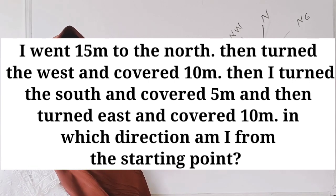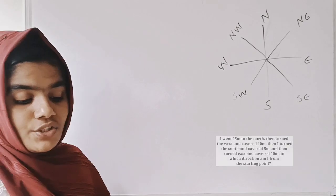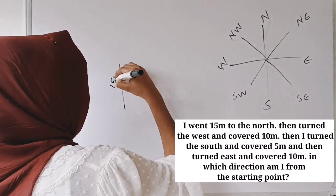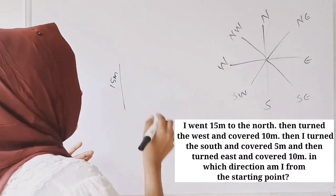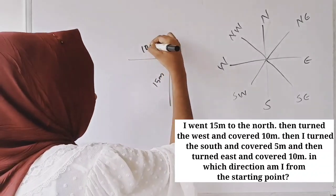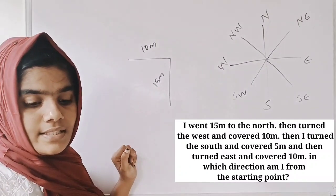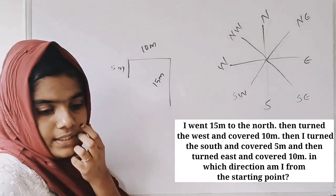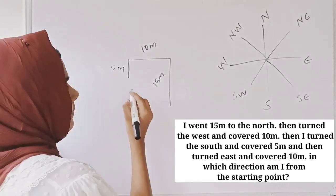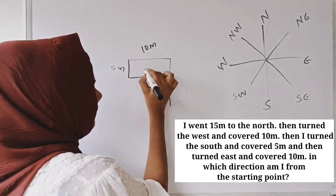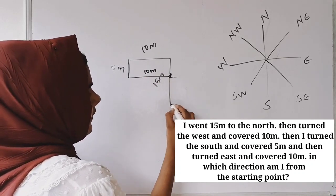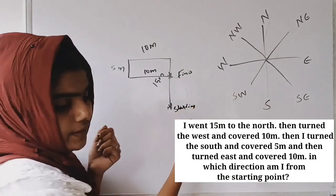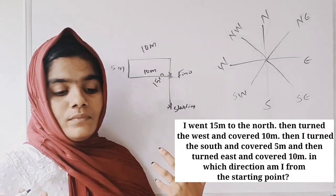Then I went 15 meters to the North. Then I turned West and covered 10 meters. Then I turned South and covered 5 meters — 5 meters away South. Then I turned East and covered 10 meters. The finishing point and the starting point are now in the same position. I am looking at the direction from the starting point.